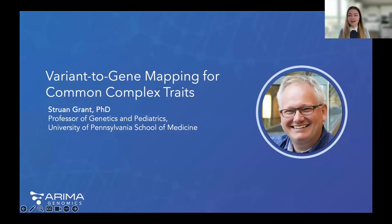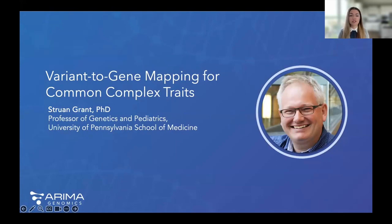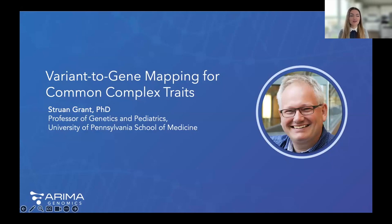In summary, 3D genomics is a powerful tool for three key elements: obtaining sequence information, identifying structural variants, and understanding gene regulatory mechanisms — all with a single data type. It addresses questions related to gene regulation including the interpretation of GWAS variants, and there are both genome-wide and targeted approaches designed for specific biological questions. Now let me introduce our guest speaker, Dr. Struan Grant, Director of the Center for Spatial and Functional Genomics at Children's Hospital of Philadelphia and Professor of Genetics and Pediatrics at the University of Pennsylvania School of Medicine.